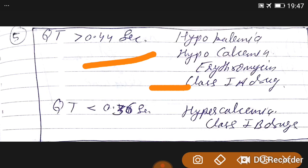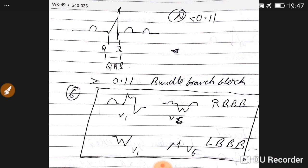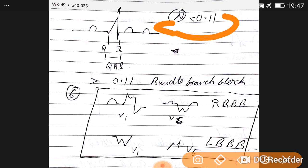QRS normal is less than 0.11. If it is more than 0.11, it indicates bundle branch block. How to remember right bundle and left bundle branch block? We see V1 M wave and V6 W wave, it's right bundle branch block.